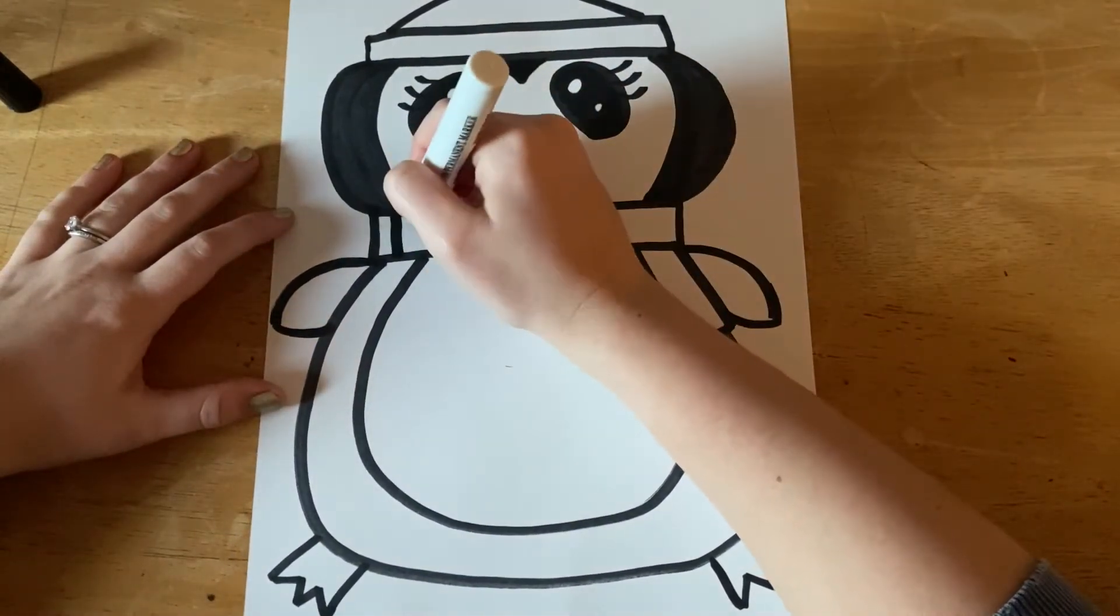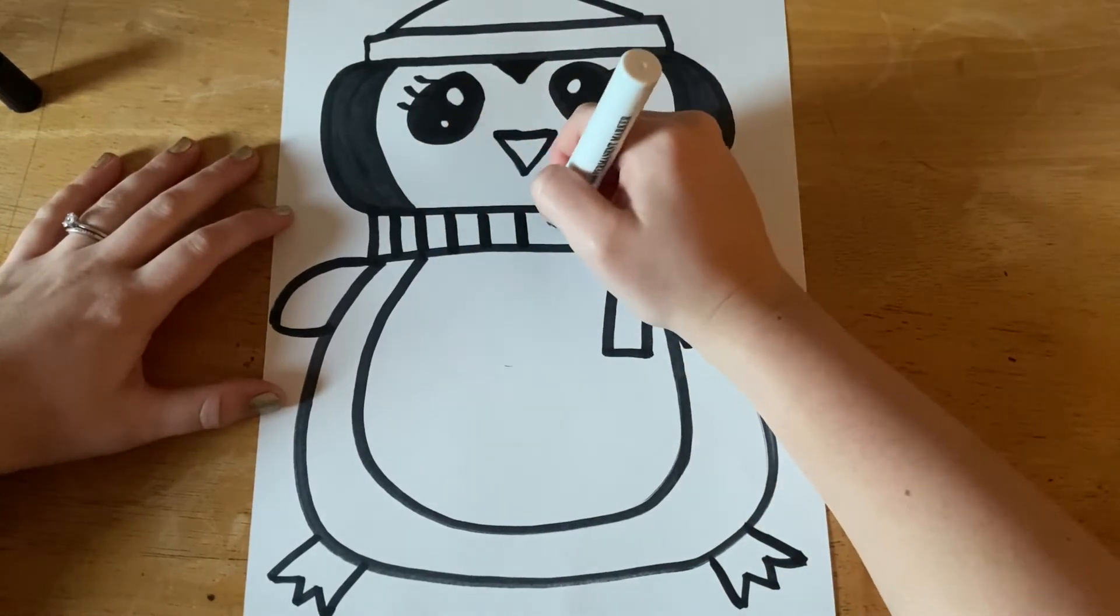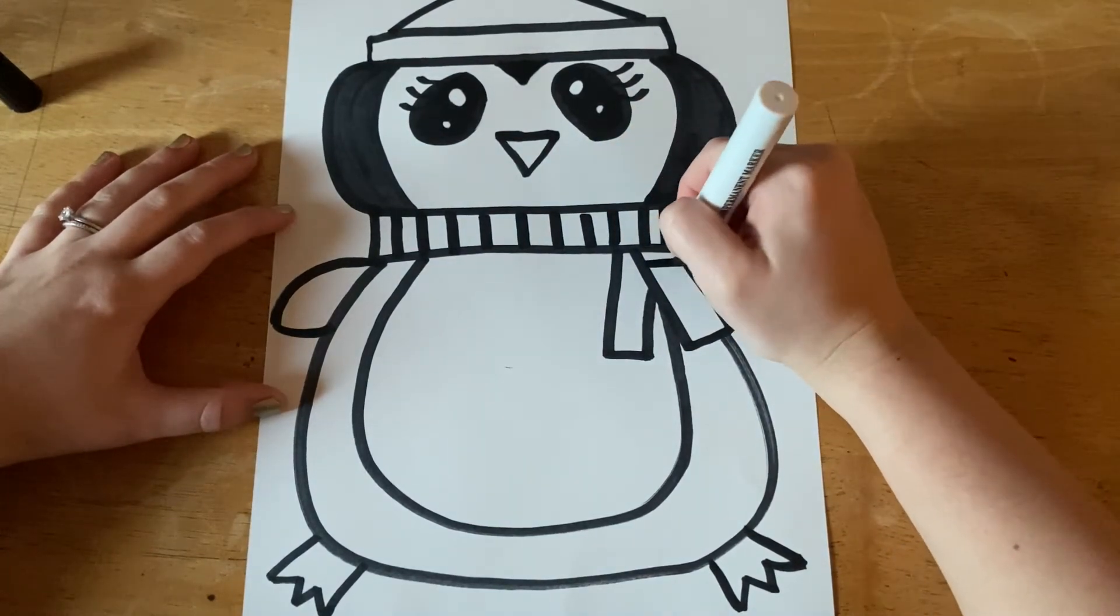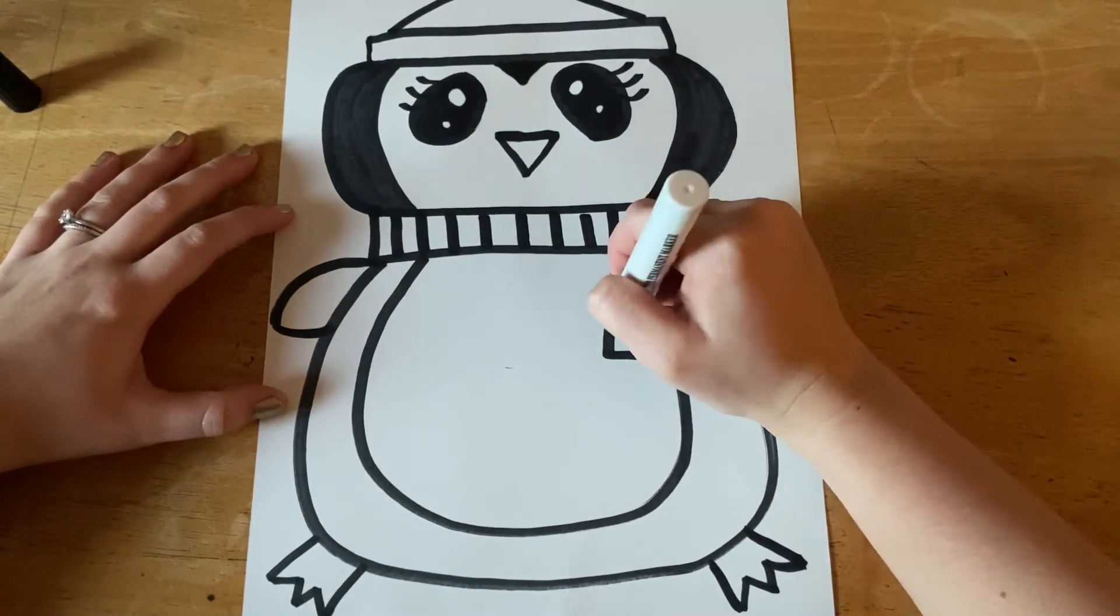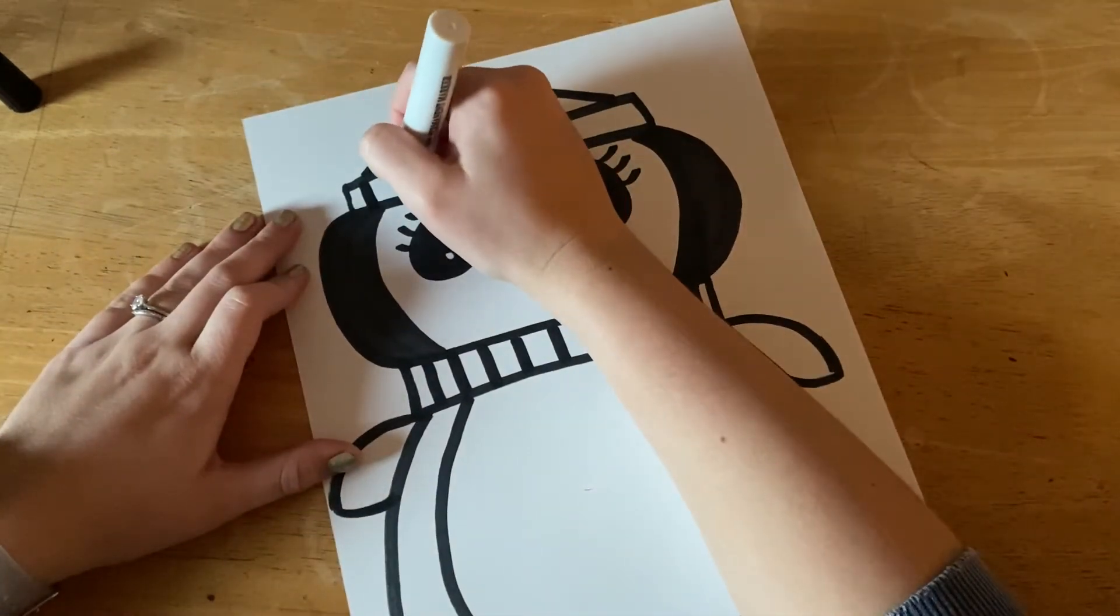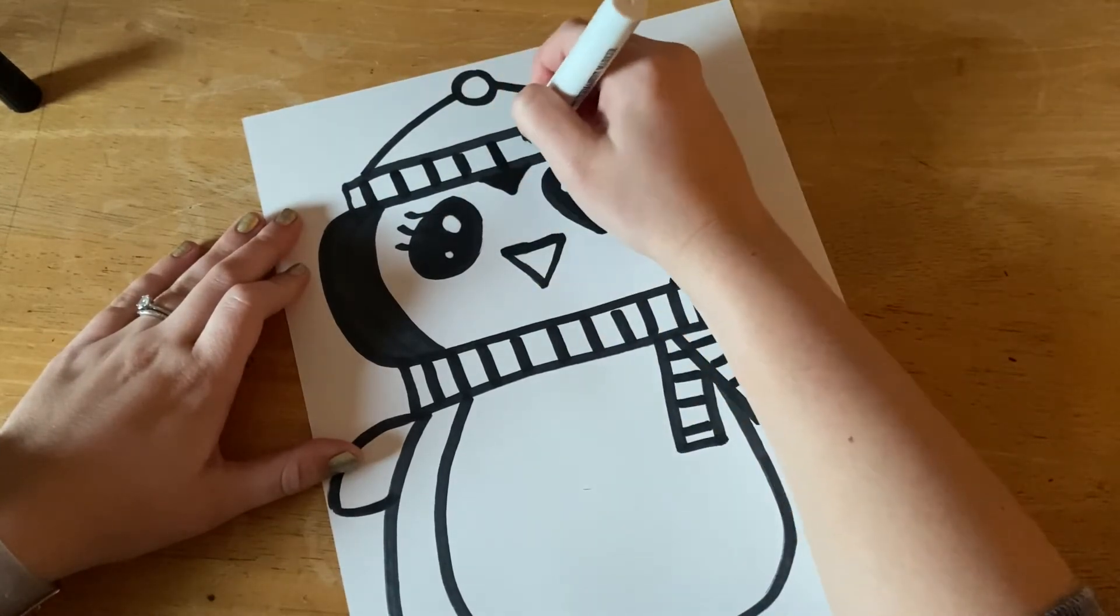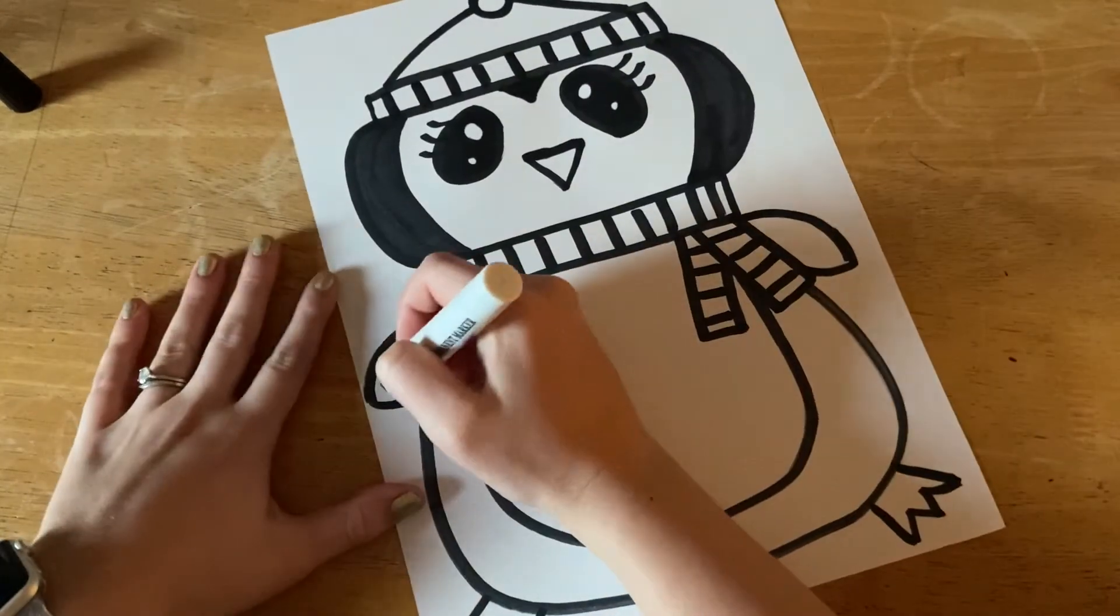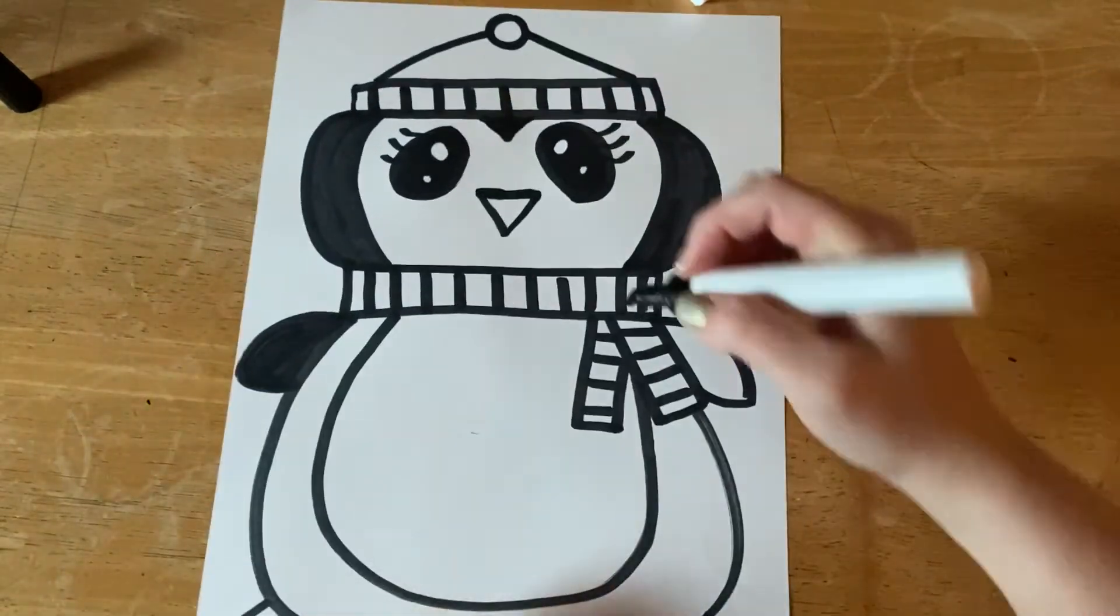All right, actually I think our penguin is done. We can add some details and some designs to the scarf and the hat - does not have to be stripes, it's just what I could think of in the moment. You could do whatever you want, maybe hearts, maybe polka dots. I'm just gonna make my hat match, but they definitely don't have to match. And while I'm thinking about it, the wings we are going to fill them in, and my marker is gonna run out, but that's okay.